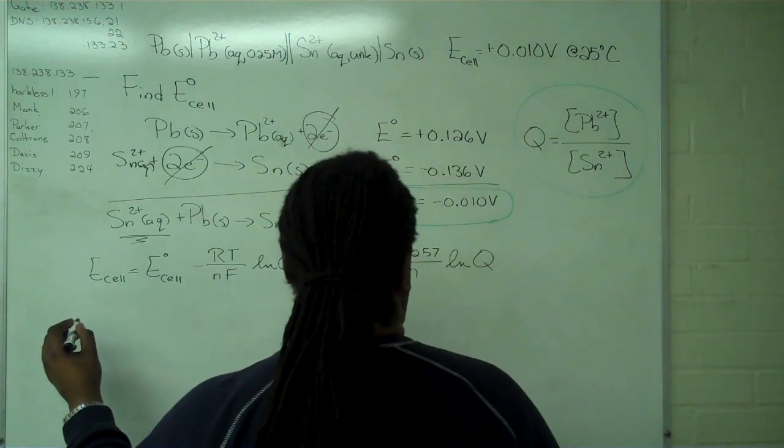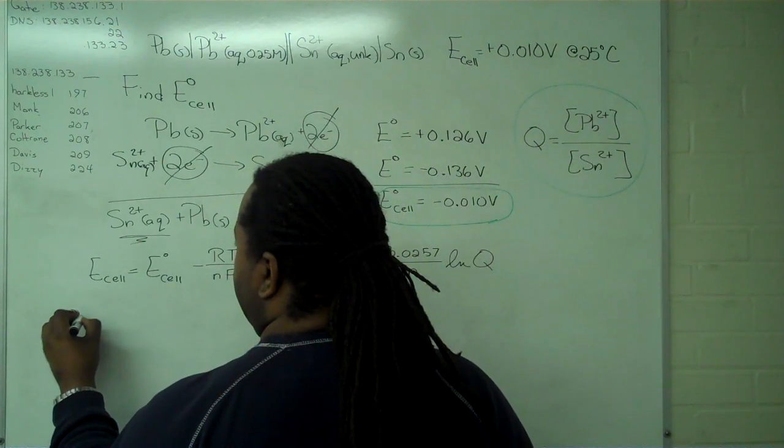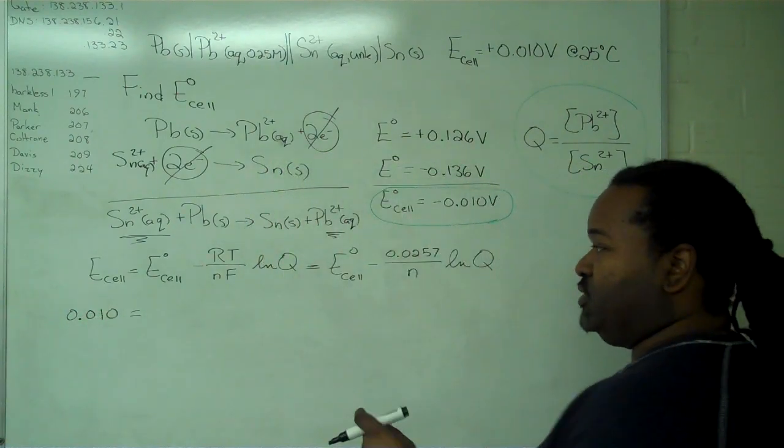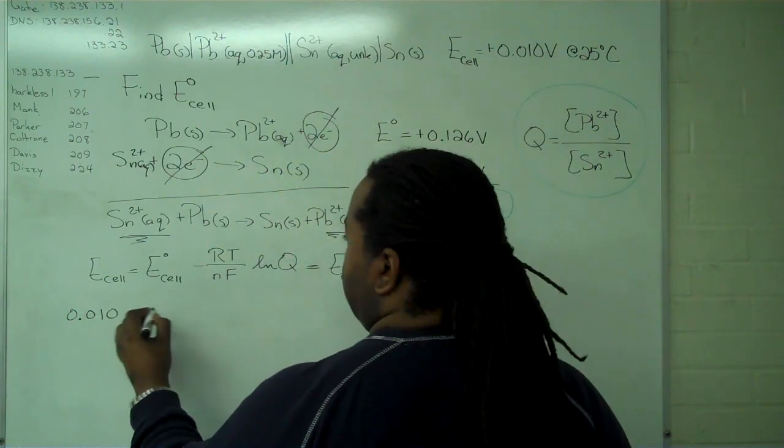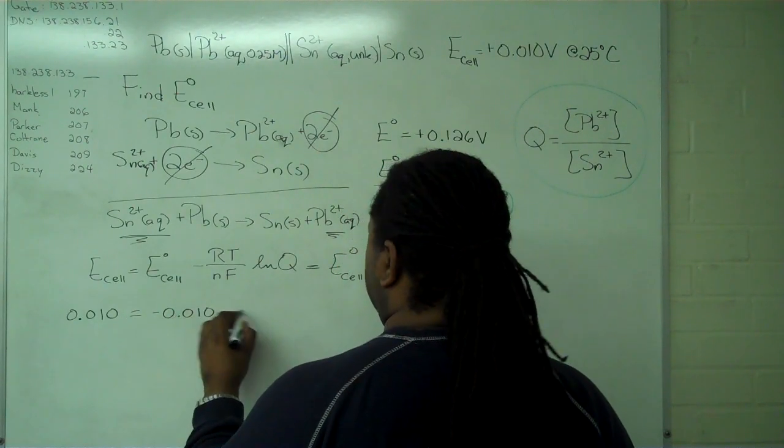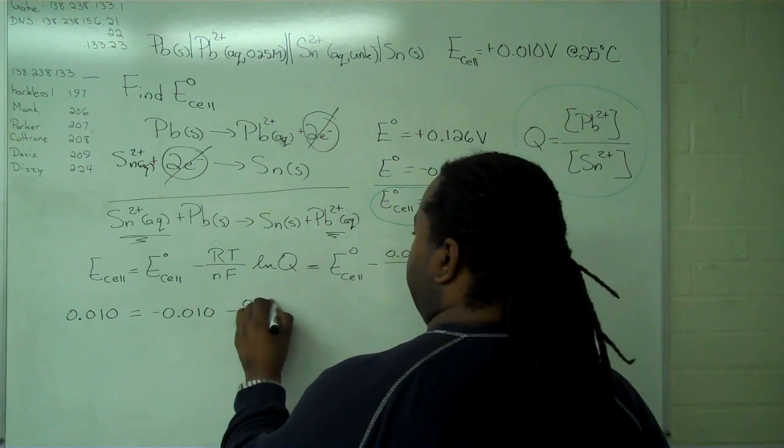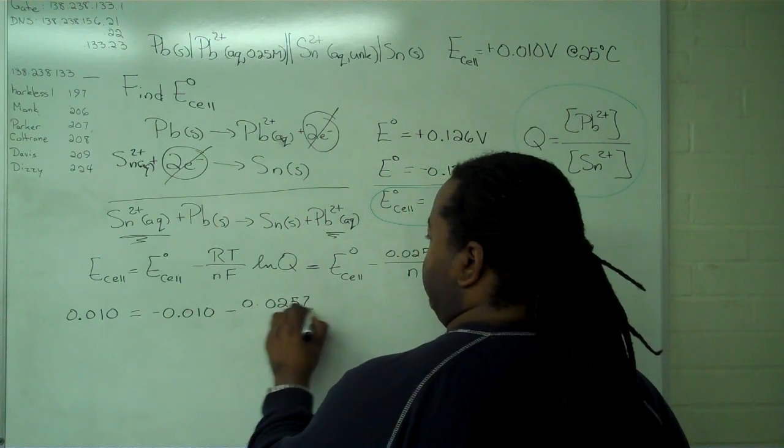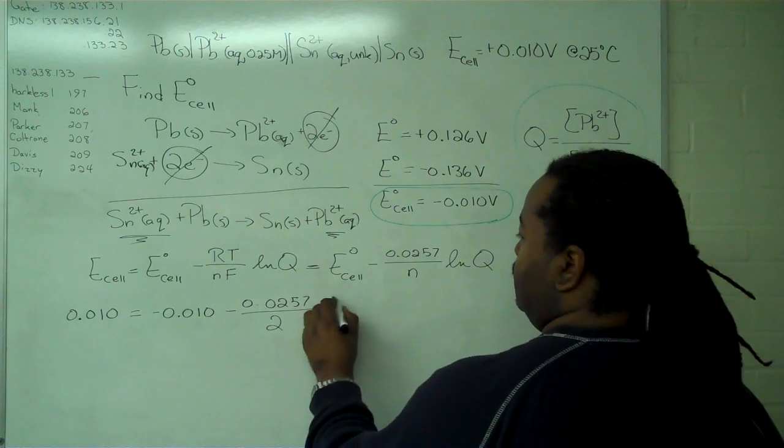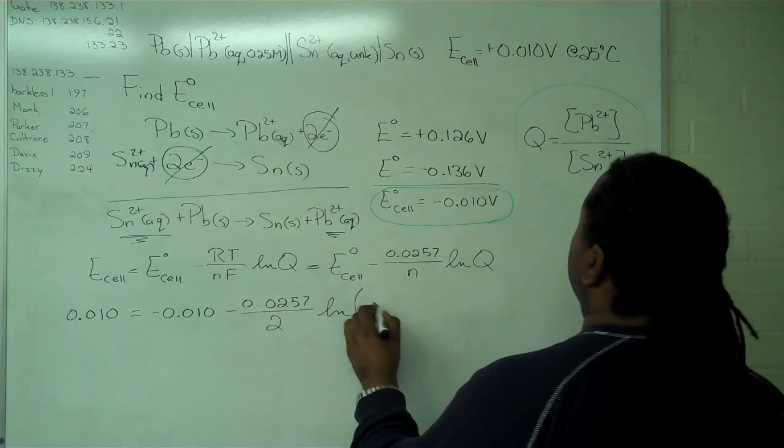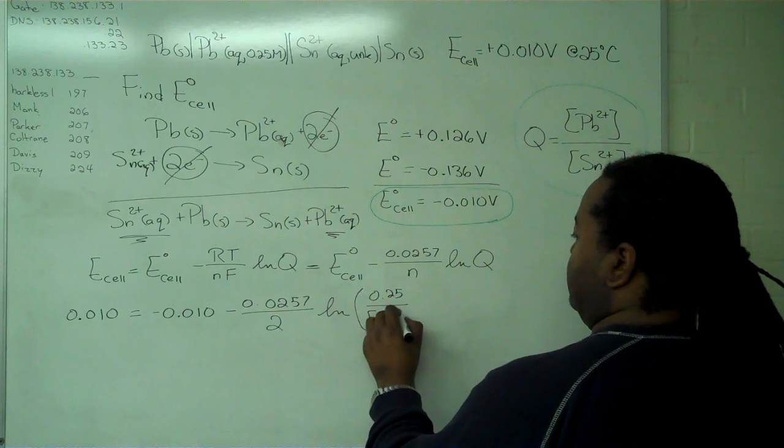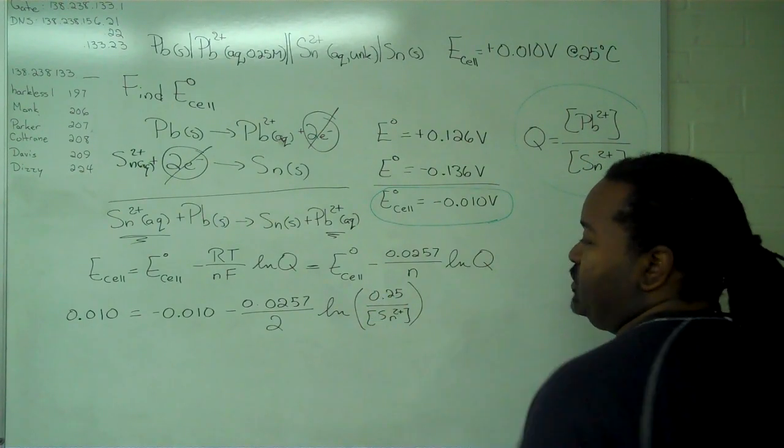For E cell, we have positive 0.010 volts. E cell standard is negative 0.010. We have minus 0.0257 over 2, and we have ln of 0.25 divided by the concentration of Sn²⁺.